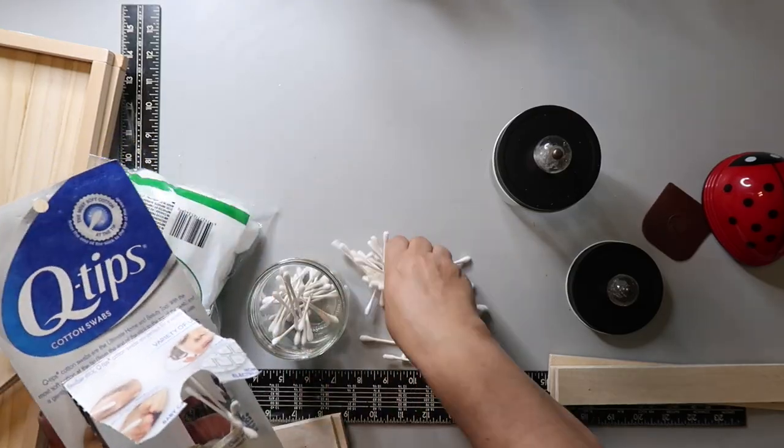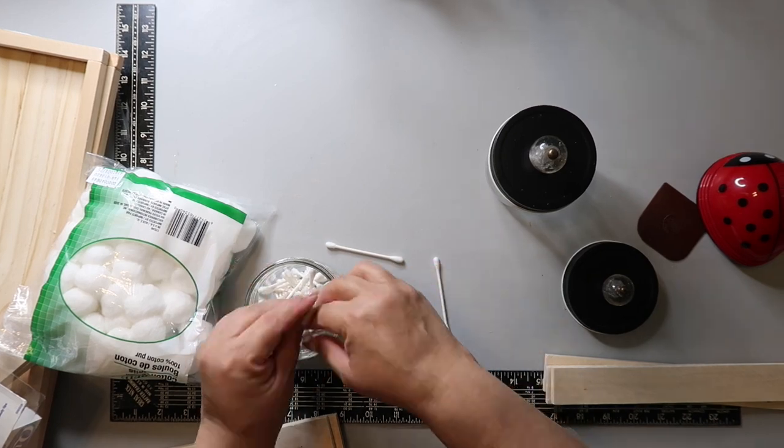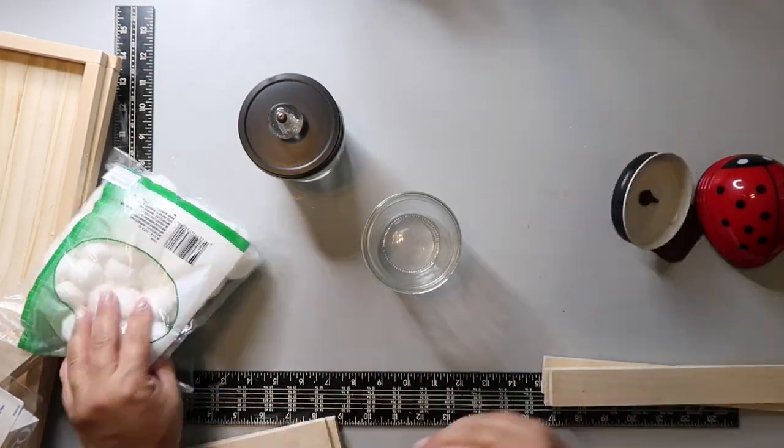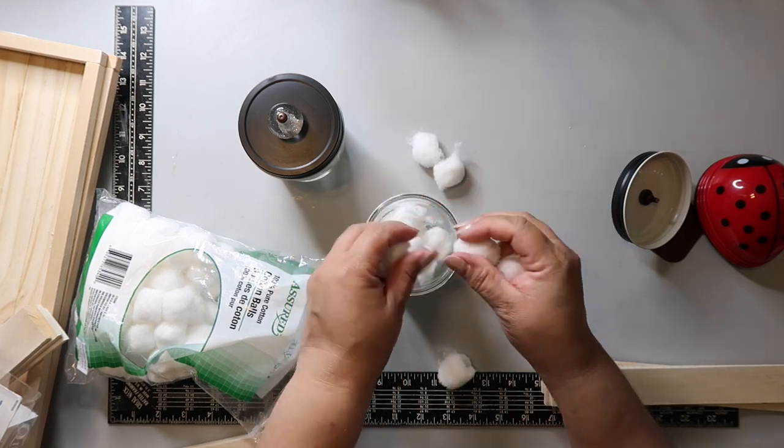I'm just adding some Q-tips and some cotton balls. You can get these at Dollar Tree. I'm not trying to pack them in either, I'm just adding it until it looks full.